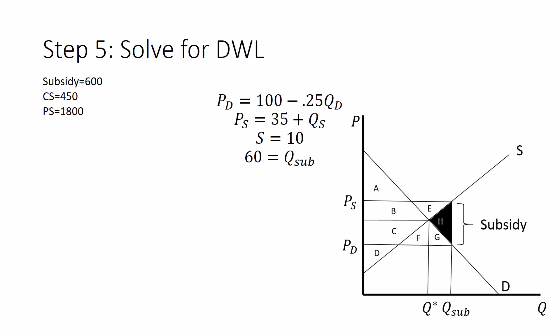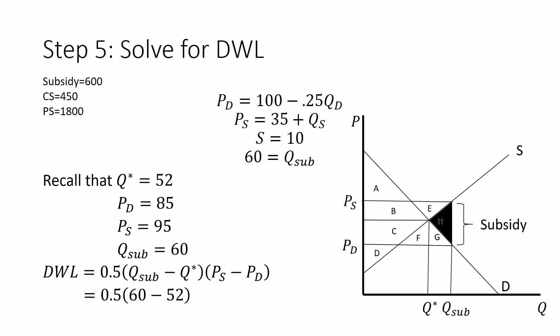Let's move on to deadweight loss now. The area of this triangle over here. We've actually already solved for all the information we need. What we would need to know to solve for this deadweight loss is the Q star, the Q sub, the PS and the PD. Or if not the PS and the PD, we could just remember that our subsidy is $10. That's the height of it. It's $10 high by definition of this problem. So remember that Q star is 52, PD is 85, PS is 95, Q sub is 60. We're good to go. Deadweight loss is half times the base, Q sub minus Q star, times the height, PS minus PD, or the shortcut we could just plug 10 in, which is half times 60 minus 52, times 95 minus 85, which is half times 8 times 10, which is 40. $40 of deadweight loss in this market.